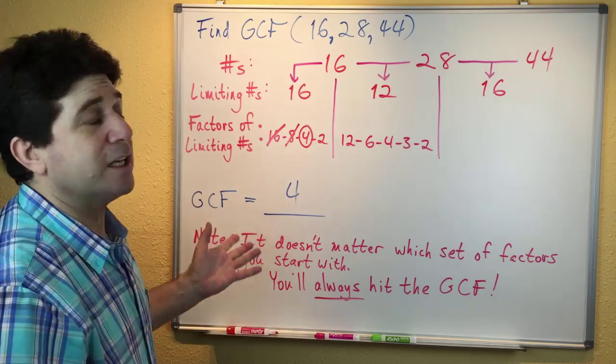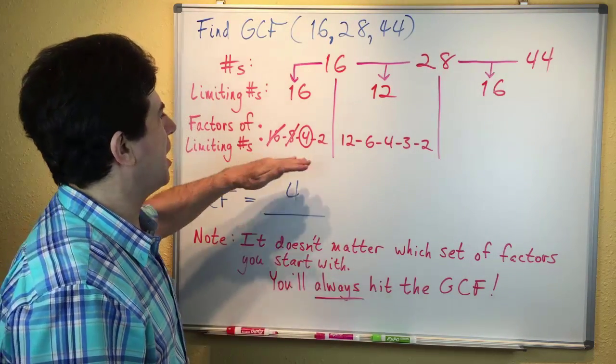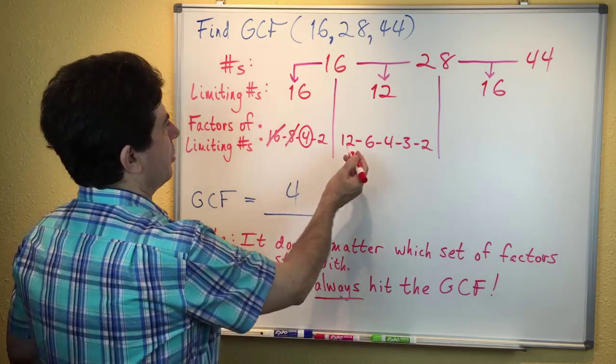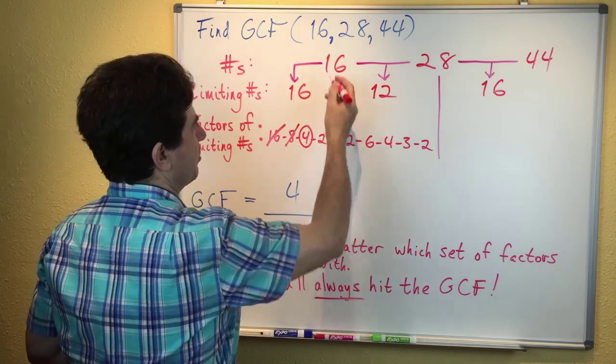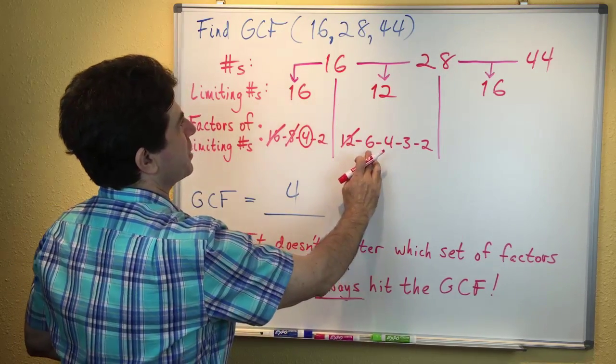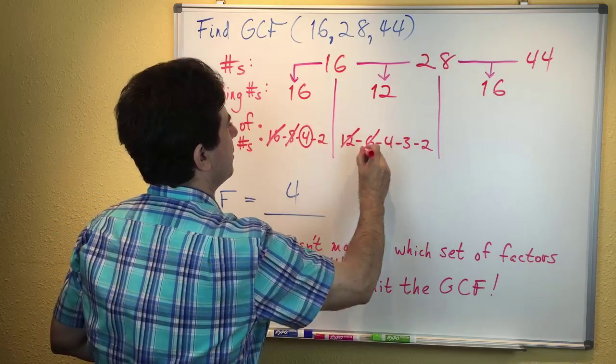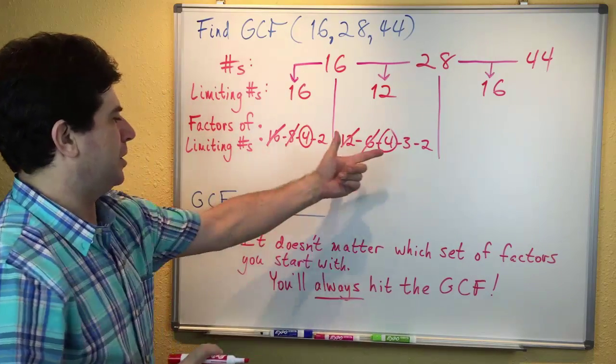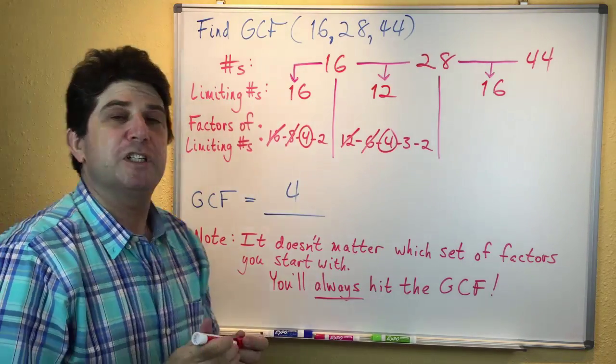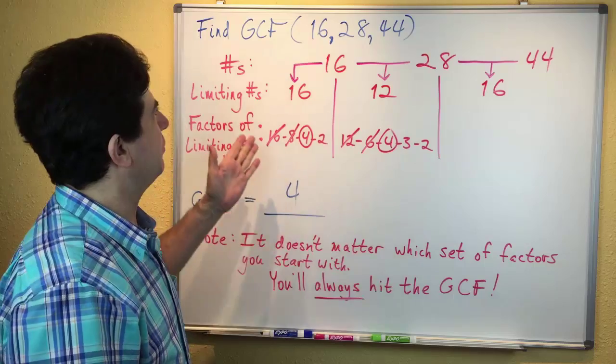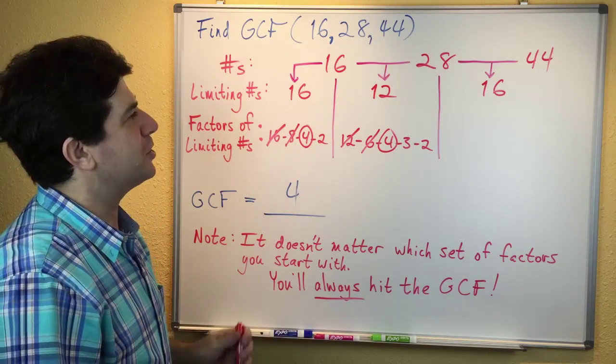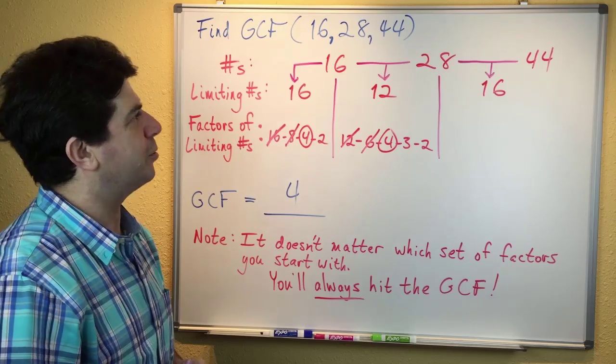As I said, it doesn't matter which column we start with. If we had done the other column first, we would have excluded 12 and 6, and we would have landed on 4, which goes into all 3. Either way, we're going to hit the GCF. That's how the shortcut works when you've got 3 or more numbers. It doesn't matter how many numbers you've got; this shortcut is always going to work.